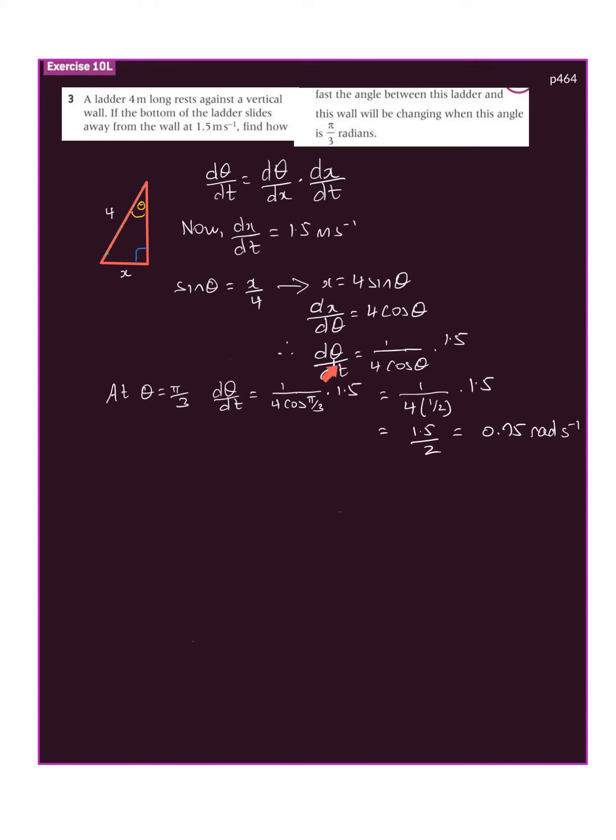Now dθ/dt, that's what we're after, is equal to dθ/dx. We're going to flip this and put 1/(4 cos θ) to represent dθ/dx.